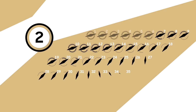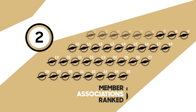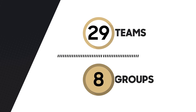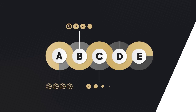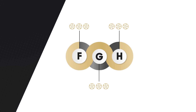The second part of the qualifiers, in which the member associations ranked 7 to 35 will participate, will kick off with a group stage. The 29 teams will be divided into eight groups. Groups A, B, C, D and E will each contain four teams, while groups F, G and H will each contain three teams.